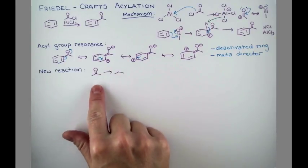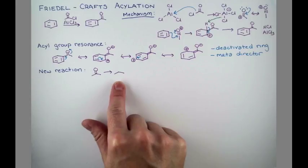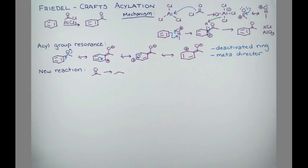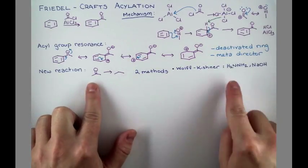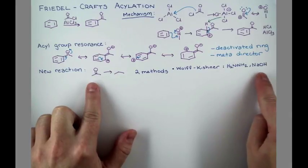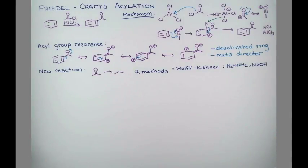A carbonyl group can actually be reduced to a CH2 group. These methods are both named in honor of their discoverers. The first is the Wolf-Kishner reaction. By treating the carbonyl compound with hydrazine in the presence of NaOH, we can reduce it all the way down to a CH2 group.